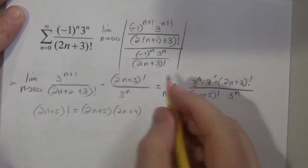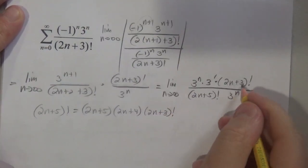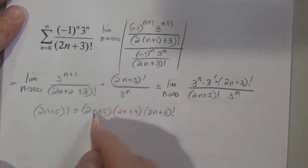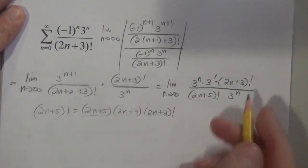So (2n + 4), still bigger than that one, (2n + 3), oh that's the same. So therefore (2n + 5) is the same as (2n + 5) times (2n + 4) times (2n + 3) factorial.